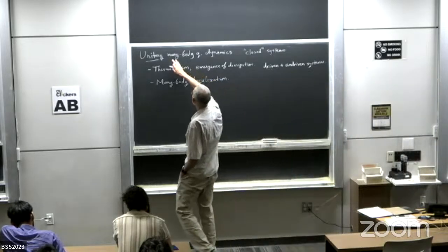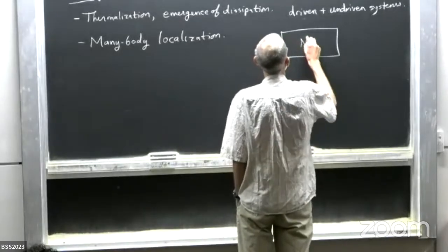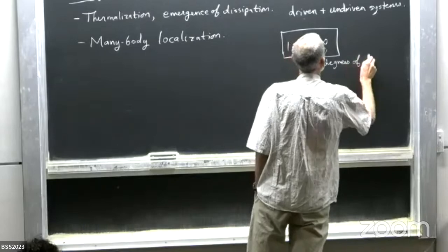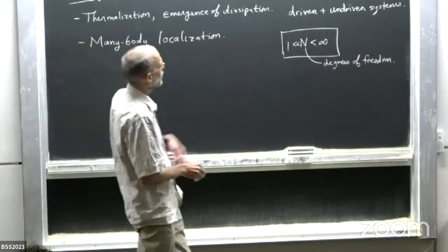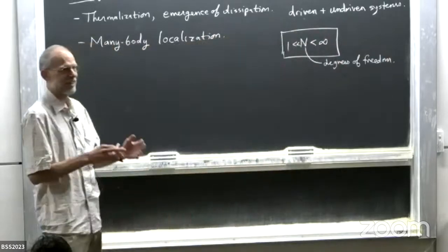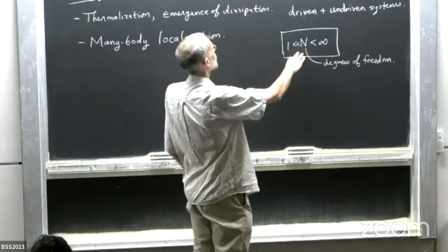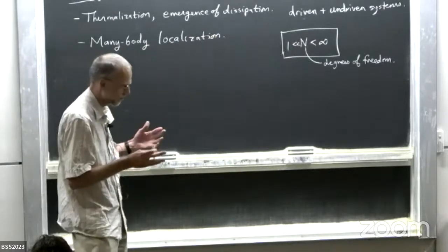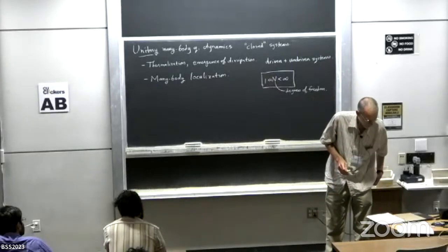We're talking about many-body systems — a system with N degrees of freedom. We're interested in N significantly bigger than one; we often think about the limit N goes to infinity, though you don't actually have N going to infinity in the lab or in exact numerical computations. We're interested in both finite N and the limit of large N. The limit of large N makes certain things well-defined, whereas at finite N the distinctions are just crossovers rather than phase transitions.